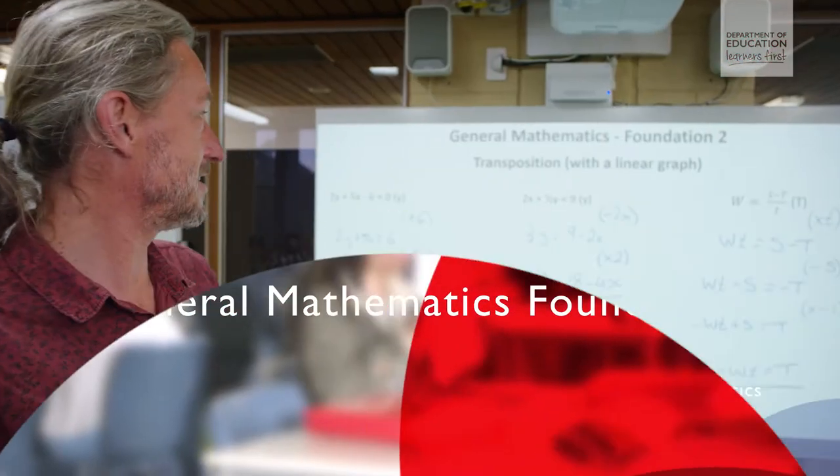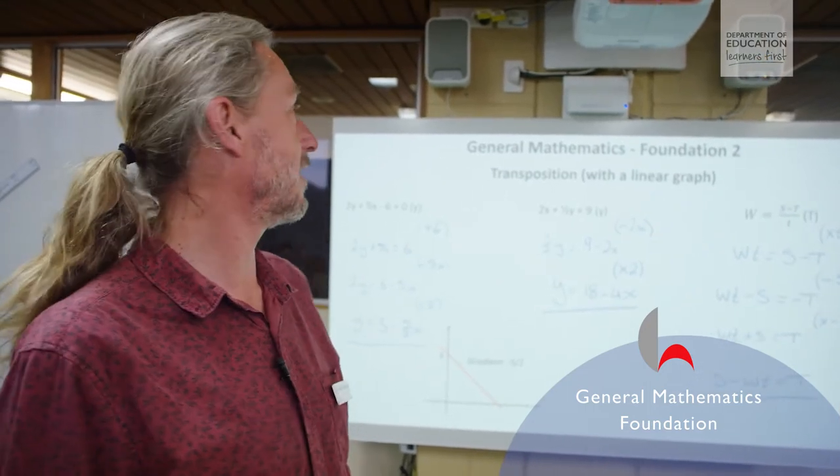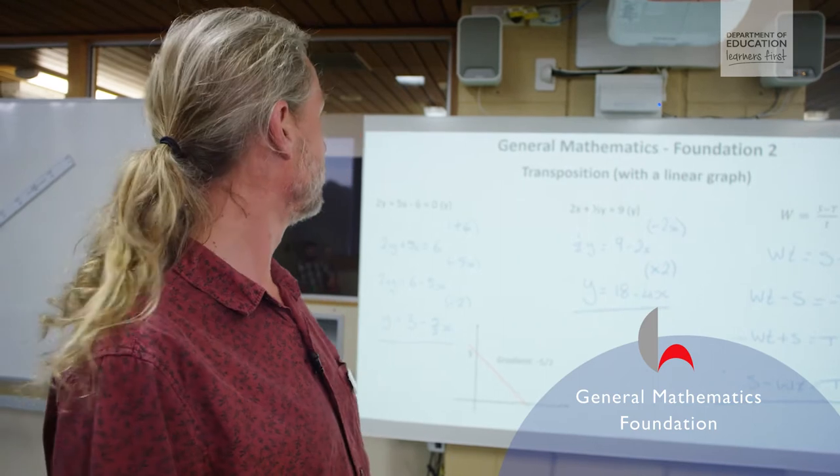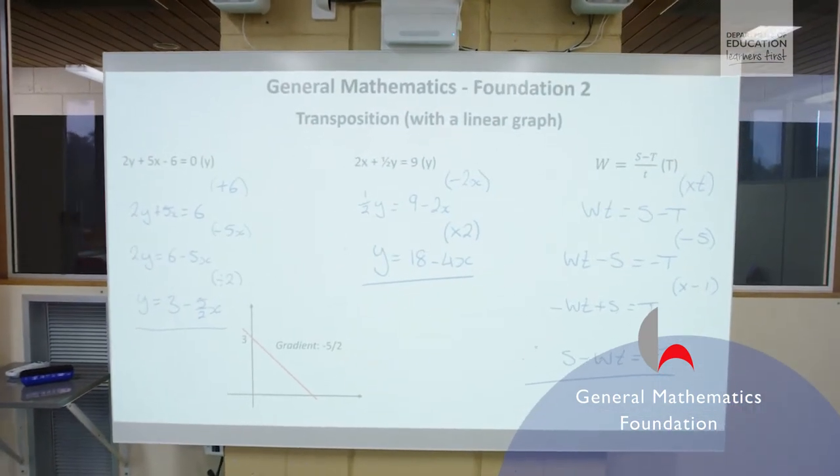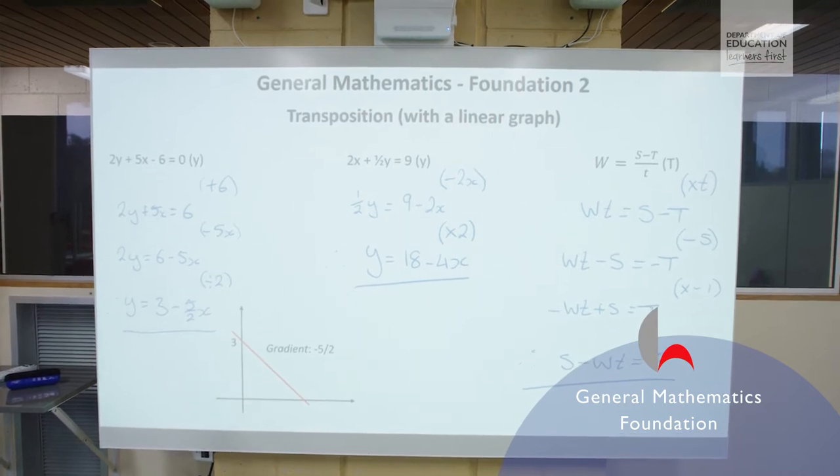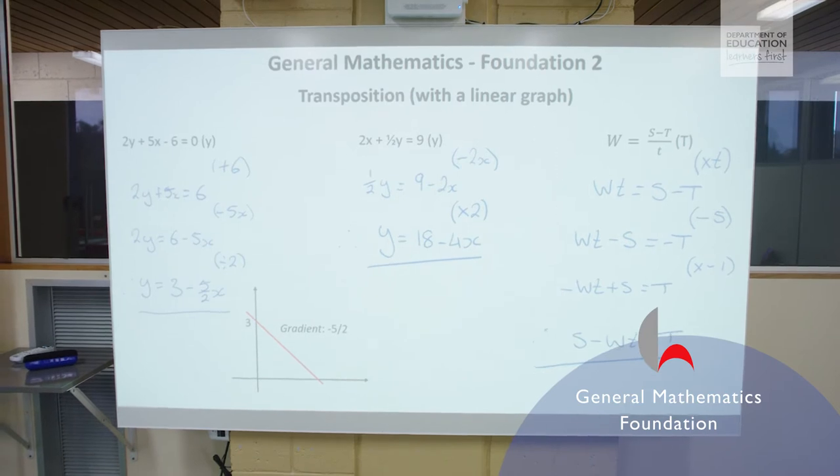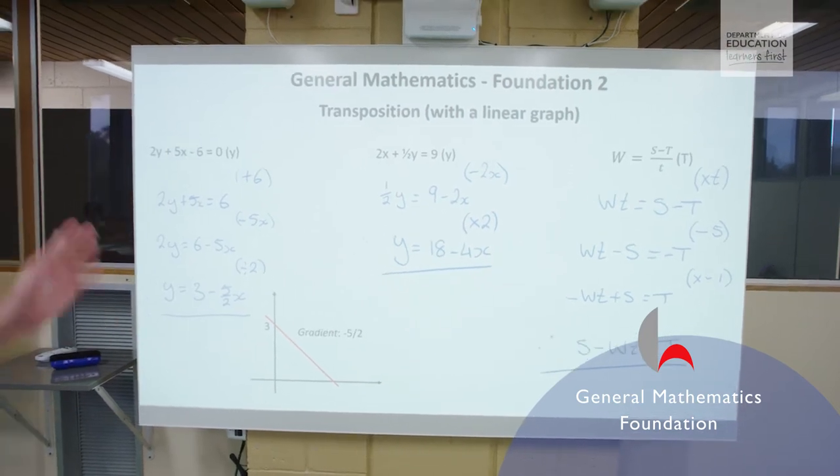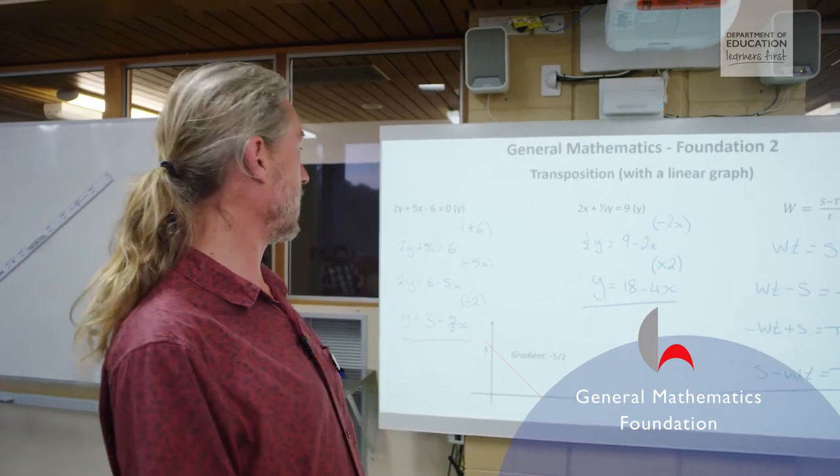So this is some examples of the type of question that we do in General Mathematics Foundation. It's transposing some linear algebra so this example over here we've got 2y plus 5x take away 6 and it's asking us to solve for y and we essentially rearrange the equations.